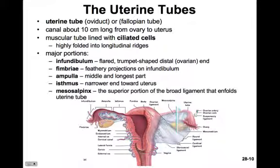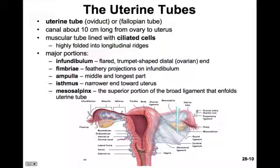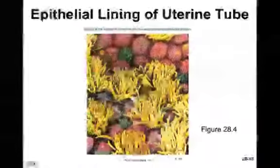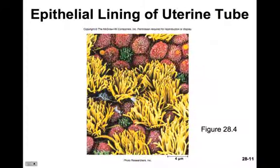The major portions of the tube are the infundibulum — the flared, trumpet-like part at the distal end covered with fimbriae, very feathery projections that sweep the ovulated egg from the ovary into the oviduct — the ampulla, which is the middle and longest part, and the isthmus, the narrow end towards the uterus. A piece of the broad ligament called the mesosalpinx enfolds the uterine tube. In the scanning electron micrograph, you can clearly see the ciliated epithelial lining of the uterine tube.